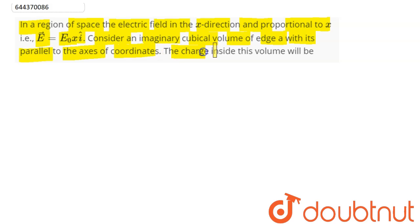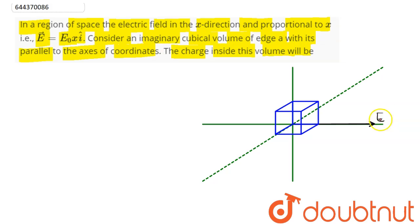To the axis of coordinates, the charge inside this volume will be. So here this is our cube, electric field along the x-axis of the magnitude given here as E0 into x. We need to find the charge inside this volume.